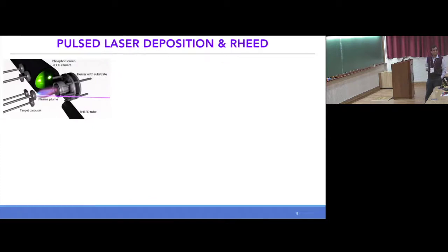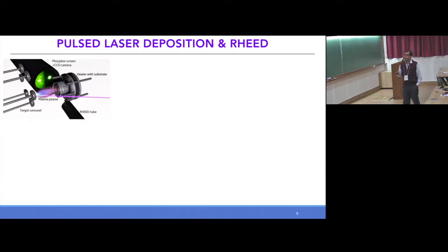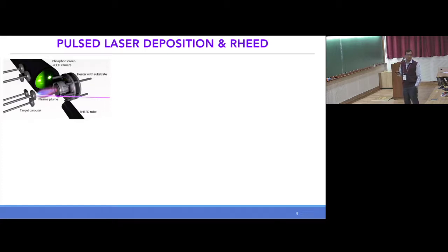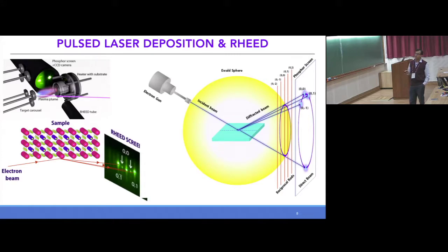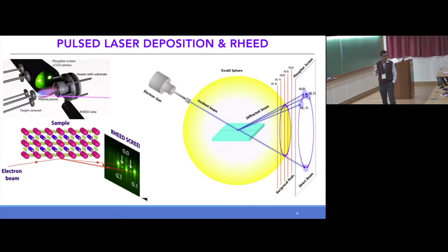Let me briefly explain how we grow these materials. The technique we use is called pulsed laser deposition (PLD). A very high energy laser falls on the target material, forming a plasma that transfers material and deposits it on top of the substrate. Apart from the basic PLD, we also have an additional setup known as reflection high energy electron diffraction (RHEED), which is a very surface sensitive diffraction technique allowing us to monitor how the system is evolving during growth.